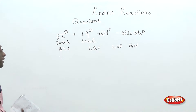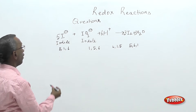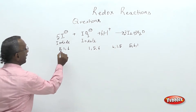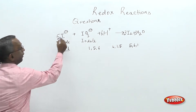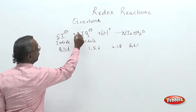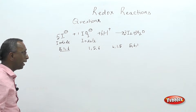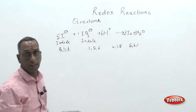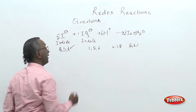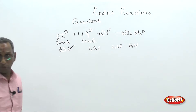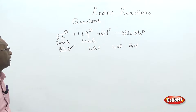So here, the stoichiometric coefficients of the reactants are 5, 1, and 6. That is 5 for iodide, 1 for iodate, and 6 for proton. This selects the correct choice — the first choice itself finishes the thing.